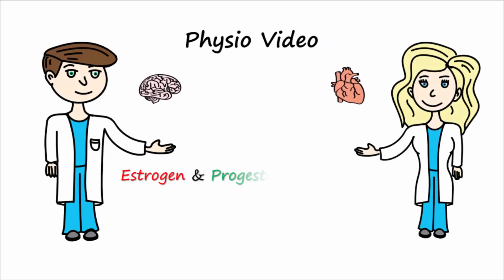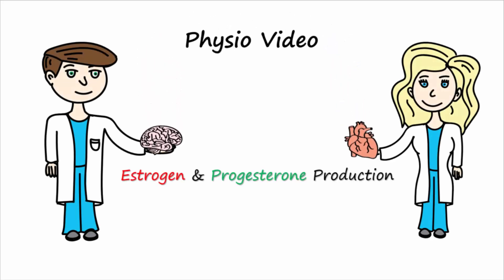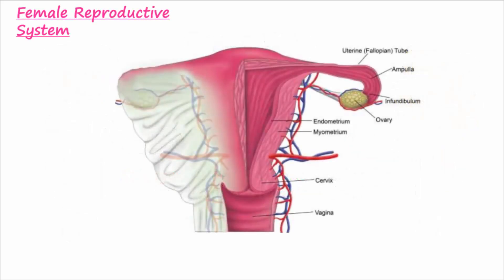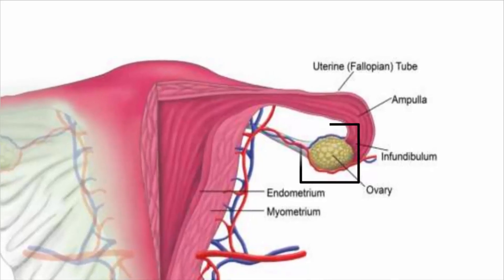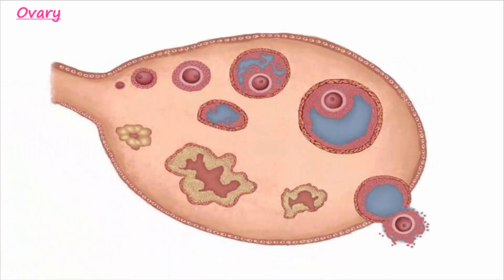Our topic today is estrogen and progesterone production by thecal and granulosa cells. Female sex hormones are made by the ovaries. Looking inside the ovary, we see some developing follicles. Cells of the secondary follicle make estrogen and progesterone. Let's take a closer look at these cells.